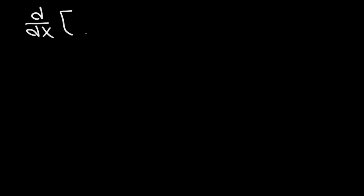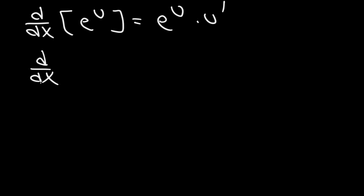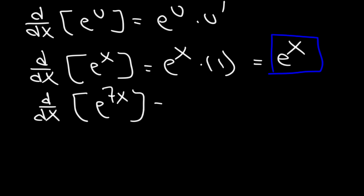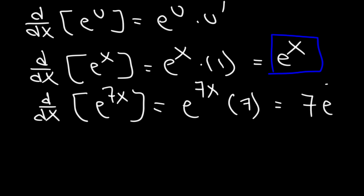Now let's talk about the derivatives of exponential functions involving the base e. The derivative of e to the u, where u is a function of x, is e to the u times u prime. For instance, the derivative of e to the x is e to the x times the derivative of x, which is 1, so the answer is just e to the x. What is the derivative of e to the 7x? It's going to be e to the 7x times the derivative of 7x, which is 7. So it's 7e to the 7x.